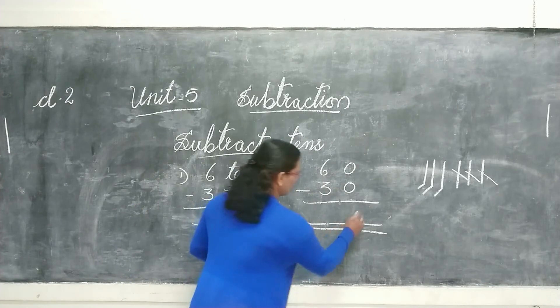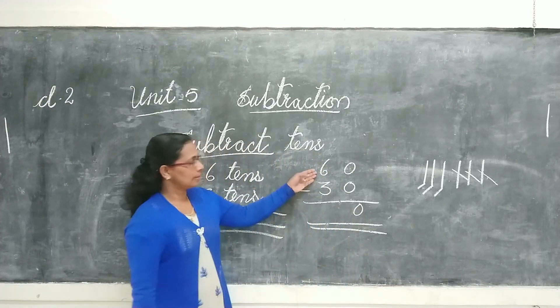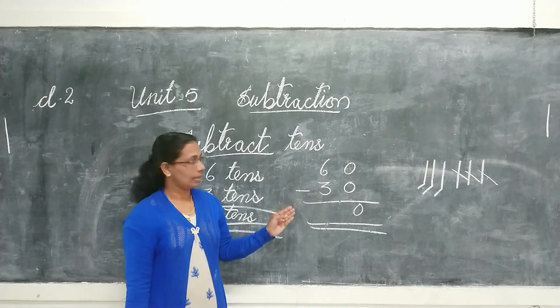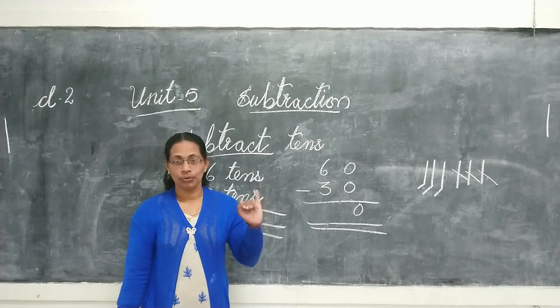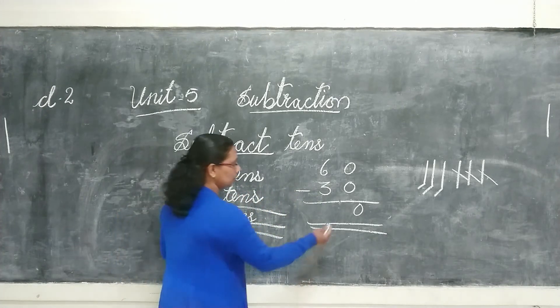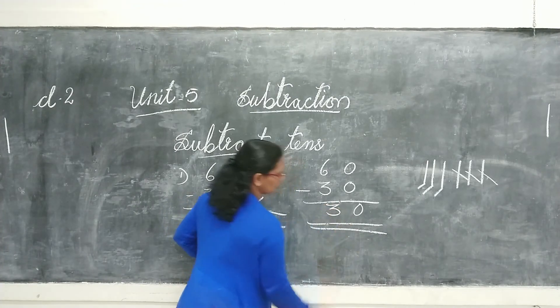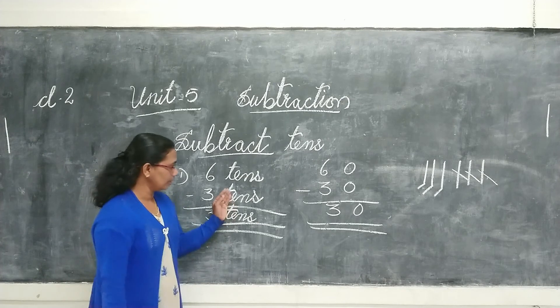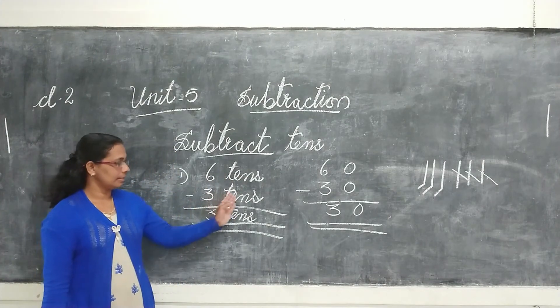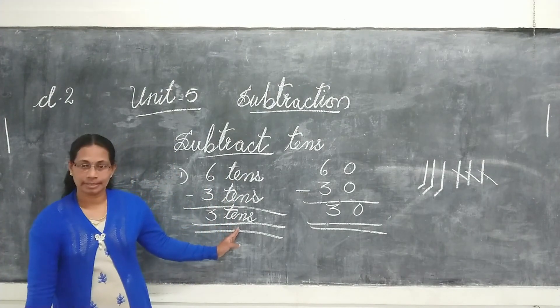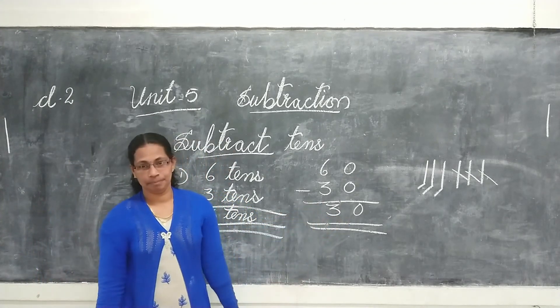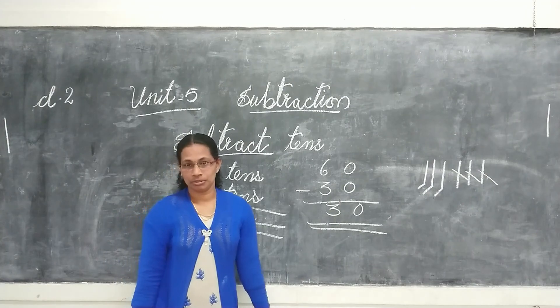0 minus 0 equals 0. Then 6 minus 3 equals 3. So 60 minus 30 is equal to 30. You see here, 6 tens minus 3 tens is equal to 3 tens. 3 tens are 30. That's the answer, the same as before. Hope you understood.